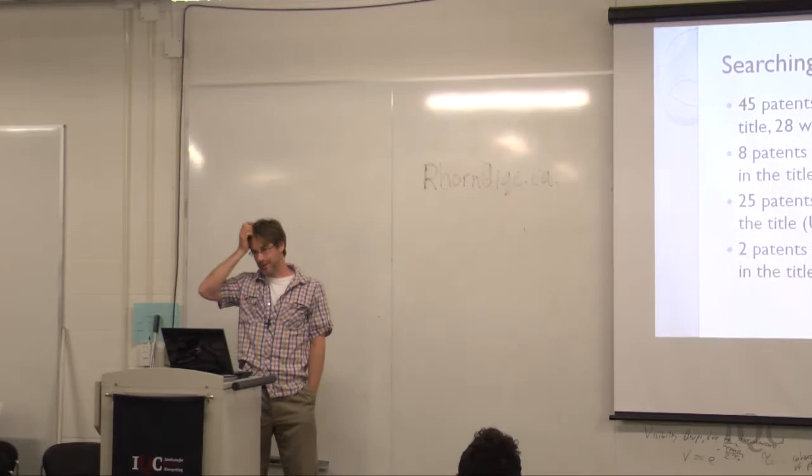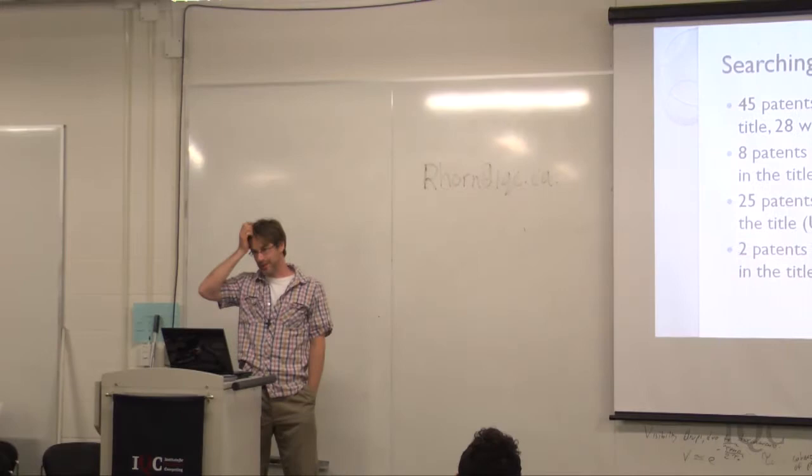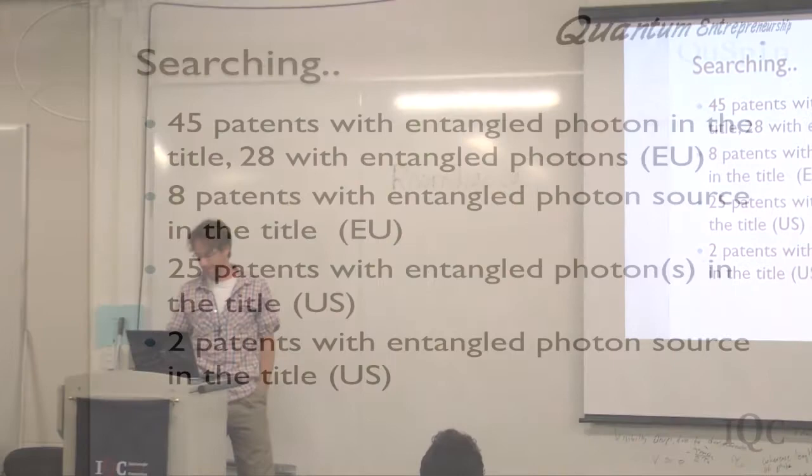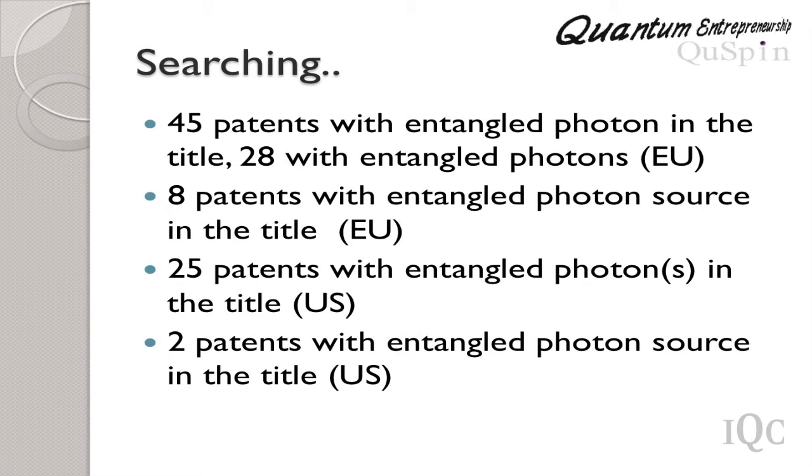For me, I'm an optics guy. I do entangled photons. This is particular because I have an invention, an idea on entangled photons. So I started searching how many entangled photon sources are there out there. There are 45 that deal with entangled photons. Eight if you have entangled photon source in the title. 25 and two in the U.S. But what I'd like to highlight is that this is a niche patent, entangled photon source. Nobody else would care about it. And yet there are lots out there. So I think it's encouraging. It's discouraging in the sense that they've already got one out there. But it's encouraging in the sense that these little details are out there. And you might be surprised at who's got these.